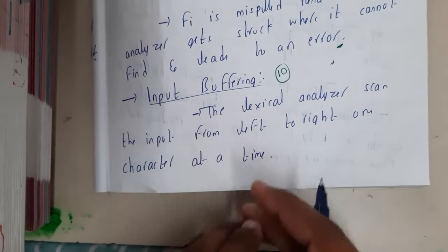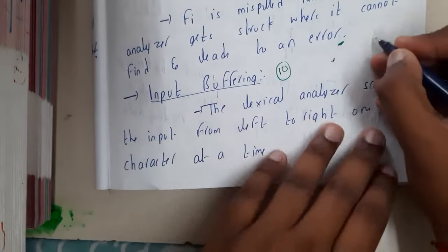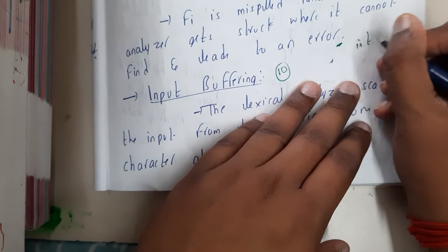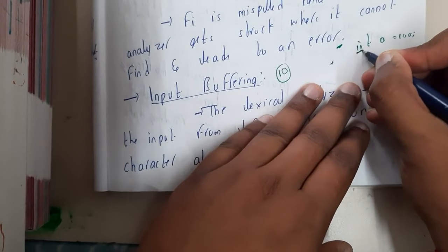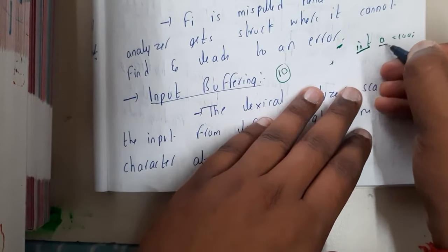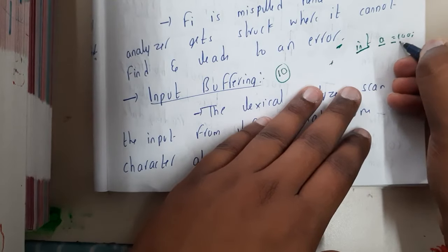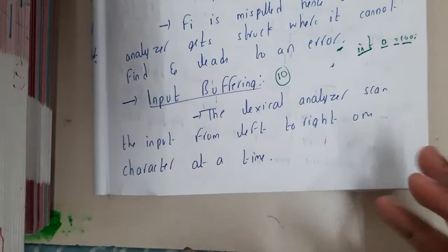Basically, internally how they are scanned and divided. Assume that you wrote int a equals to 100. How is it identified: int as a lexeme, a as a lexeme, equal to as a lexeme, and 100 as a lexeme? How is it going to analyze or identify this?